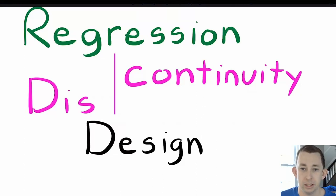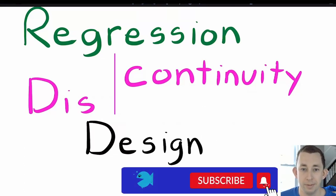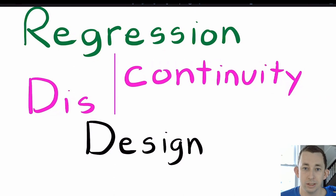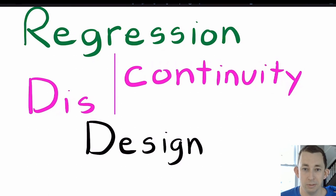Welcome back to In Case of Econ Struggles — another causal inference struggle. Today we're talking about regression discontinuity design, or RDD. Specifically, I'll give a motivated example for how RDD works, talk about how we estimate the effect of X on Y using RDD, discuss the assumptions we make, and explain why the RD estimate is a local average treatment effect for compliers at the threshold.